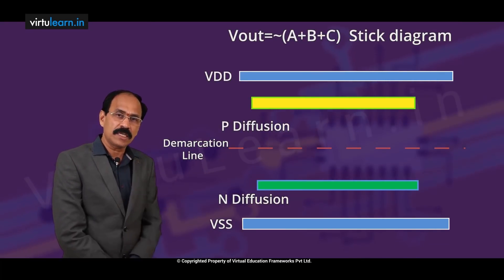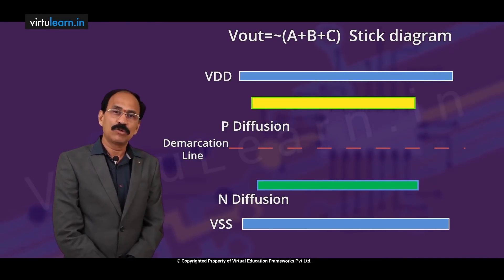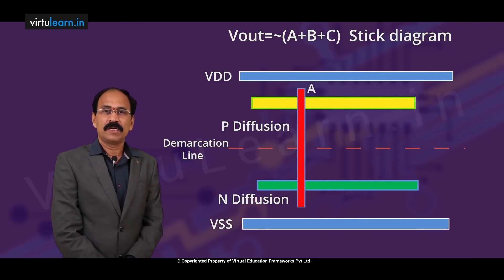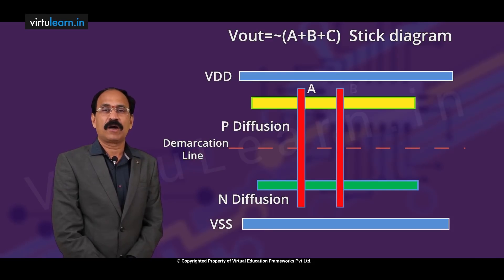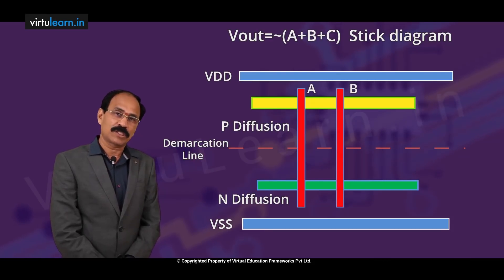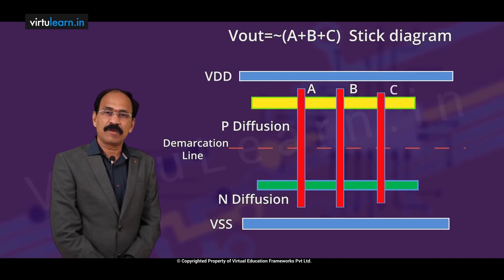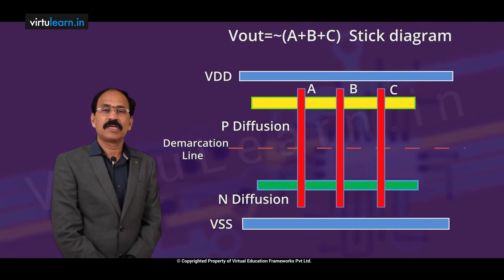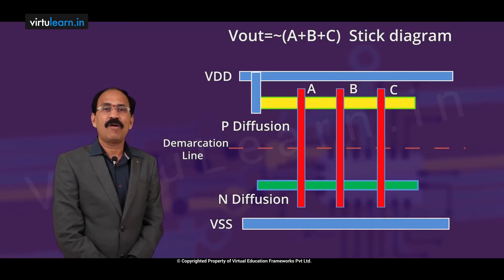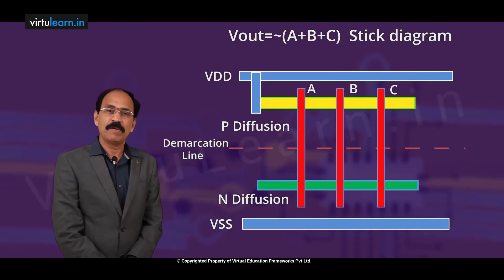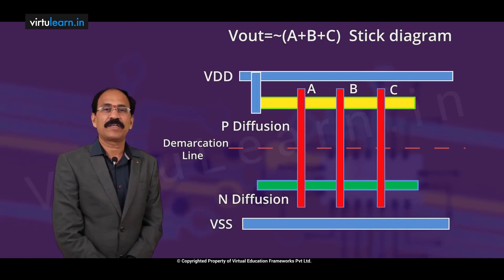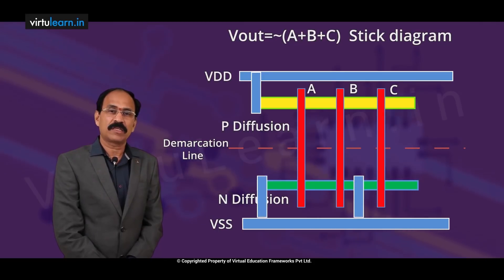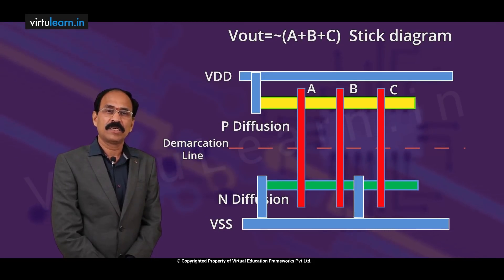It is resulting in two transistors — one P-MOS and one N-MOS transistor — which is connected to input A. Again with another polysilicon, we also have two transistors, one P-MOS and one N-MOS. Then we have another two transistors, P-MOS and N-MOS. Now the drain of P-MOS has to be connected to VDD, and the sources of all N-MOS transistors below have to be connected to ground.